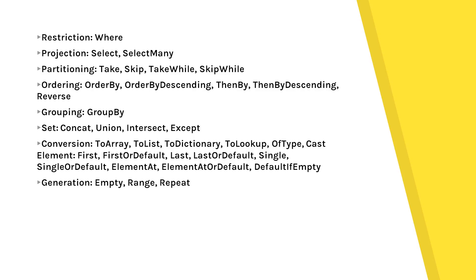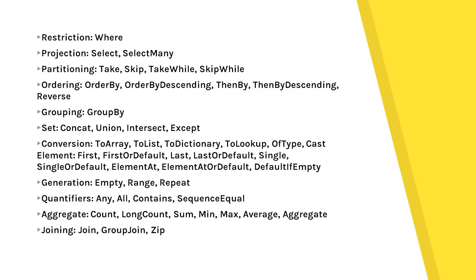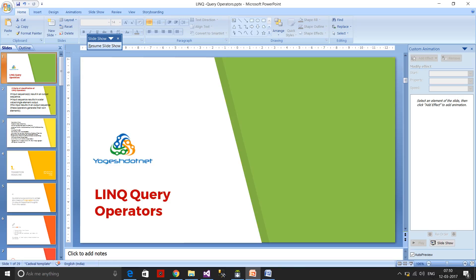Generation operators are used when you want to generate an output sequence — using Repeat, Range, and Empty. Quantifier operators let you put conditions on data you are retrieving. Aggregate operators give scalar output — for example, Min and Max — such as getting the maximum salary from an employee table. Joining operators are used to join two tables based on some condition.